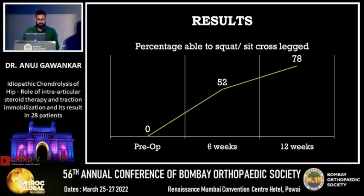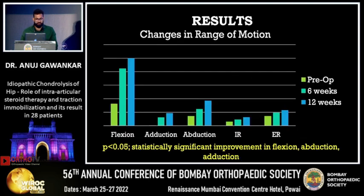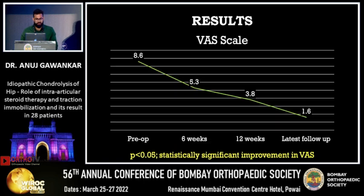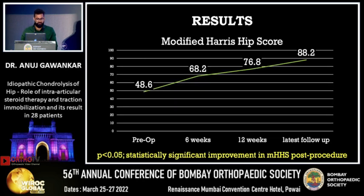Patients who were not able to squat or sit cross-legged pre-procedure — 78% of them were able to do so after 12 weeks. There was significant improvement in range of motion, especially flexion and abduction, after 12 weeks. The VAS score improved significantly from 8.6 pre-procedure to 1.6, and the modified Harris Hip Score also improved from 48.6 pre-procedure to 88.2 at the latest follow-up.